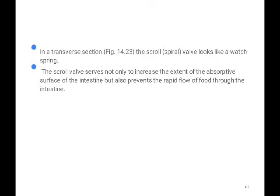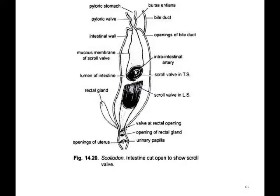The scroll valve not only helps increase the absorptive surface area but also prevents the rapid flow of food through the intestine. In humans, the intestinal surface is increased by villi — finger-like projections of epithelial cells that help in absorption and increase the surface area of the intestine.